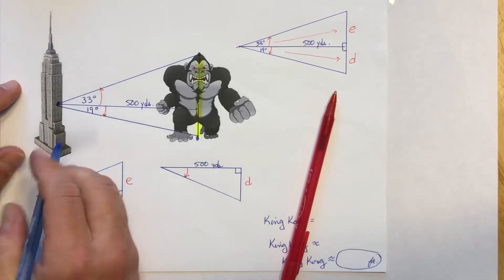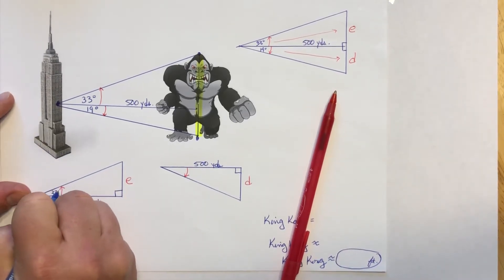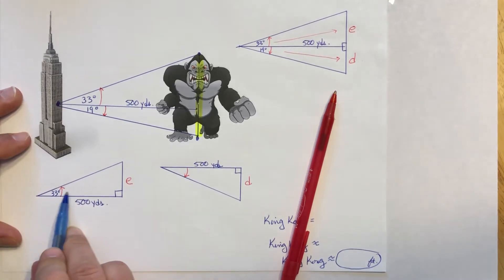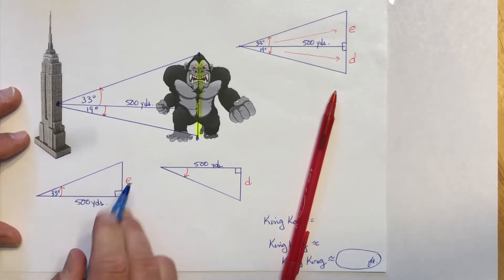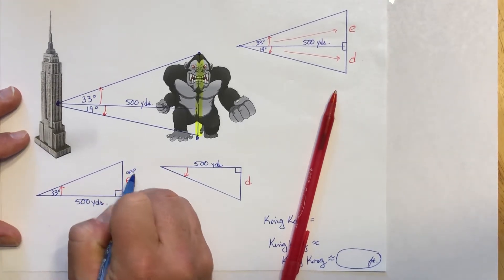Oops, I forgot to add the angle of elevation in there. So now 33 degrees. Where is the side I'm looking for? That's opposite. What side do I have? That's adjacent.